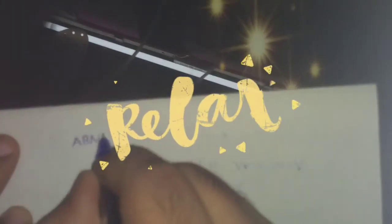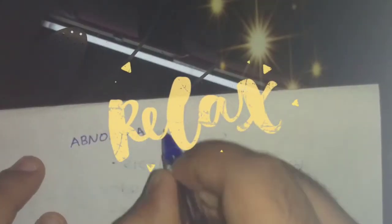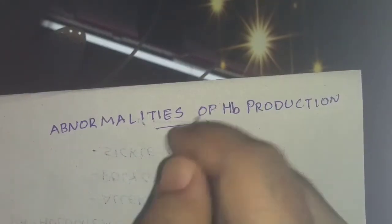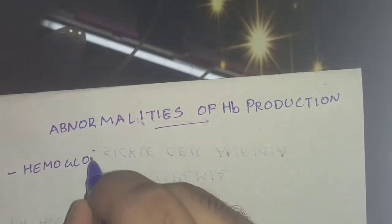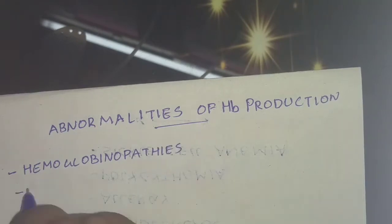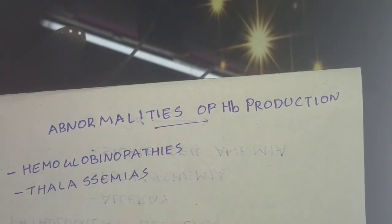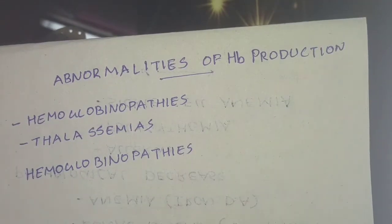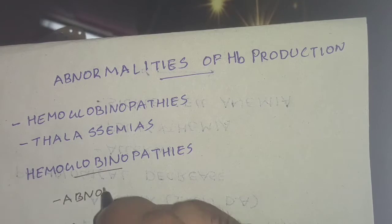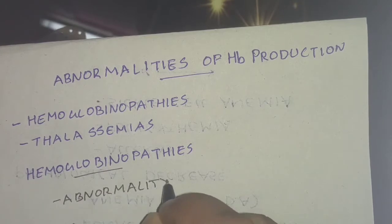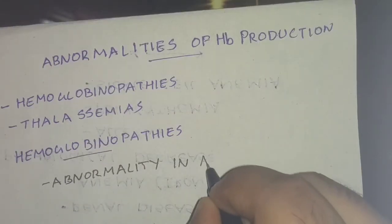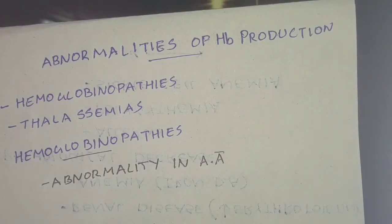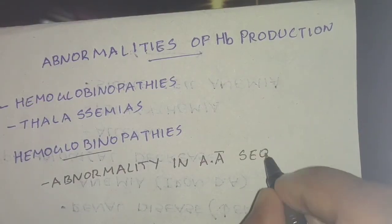Welcome back to YouTube channel PD Bros. Today we are covering hemoglobinopathies. The abnormality of hemoglobin production includes hemoglobinopathies and thalassemia. Hemoglobinopathies specifically refer to abnormalities in the amino acid sequence of the polypeptide chain of hemoglobin.